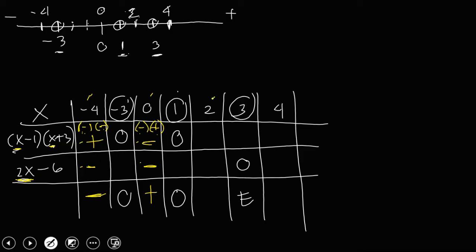For x equals 2: 2 minus 1 is positive 1, 2 plus 3 is positive 5 — positive times positive is positive. And 2 times 2 is 4, minus 6 is negative 2 — positive divided by negative is negative. For x equals 4: 4 minus 1 is positive 3, 4 plus 3 is positive 7 — positive times positive is positive. And 2 times 4 is 8, minus 6 is positive 2 — positive divided by positive is positive.